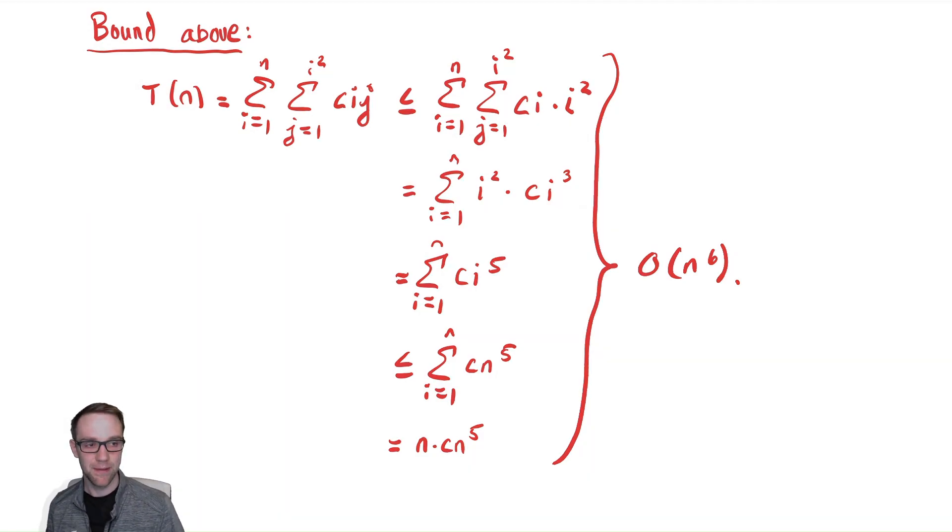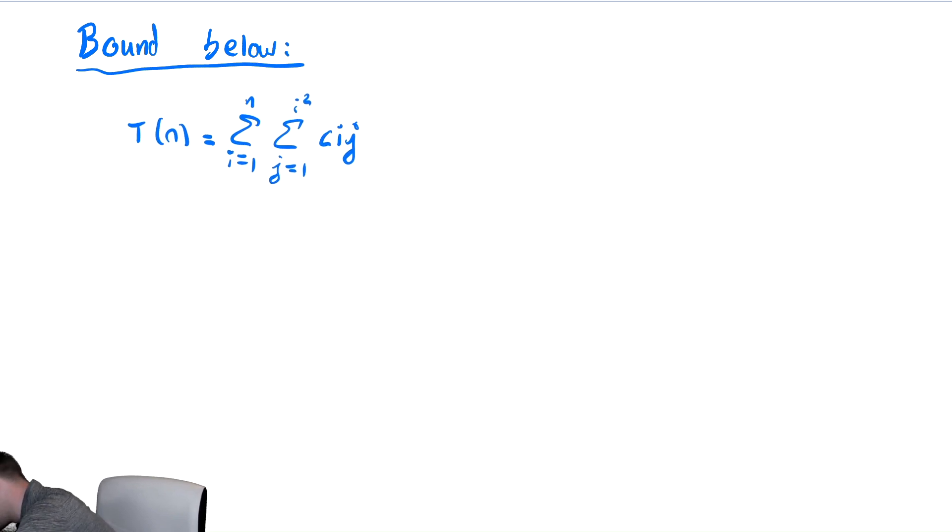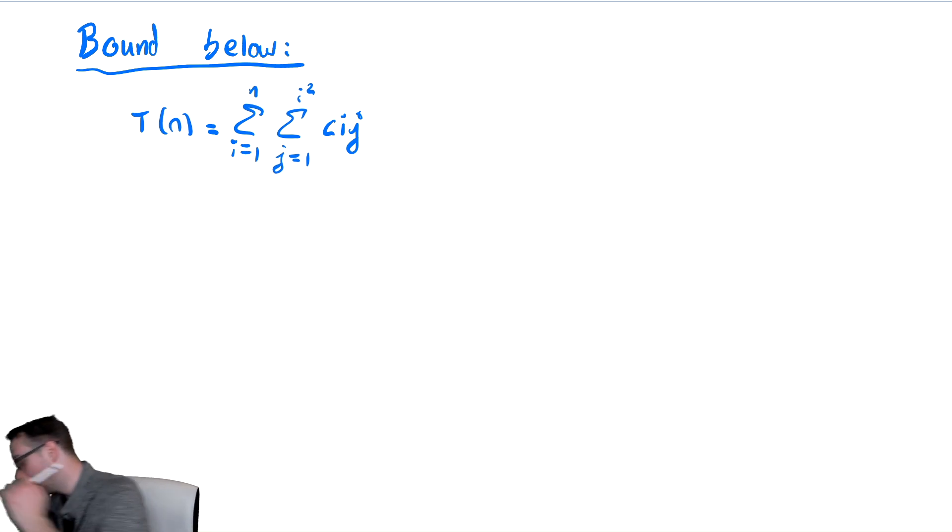So I need to bound it below and somehow get it to be in big Ω of n to the sixth. So let's get to that. To bound the summation from below, I have an entirely new page here that I created for myself just so we have enough room for sure. So we need to bound that below. And for my own sanity, I also copied the expression we had from before. So let's paste that in for ourselves.